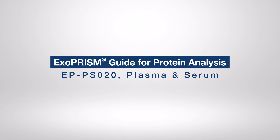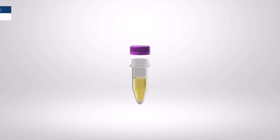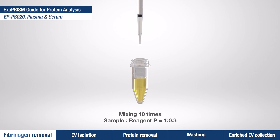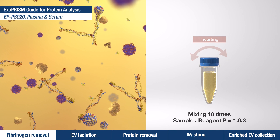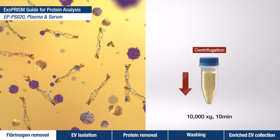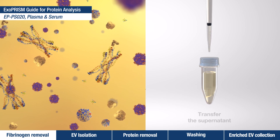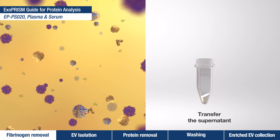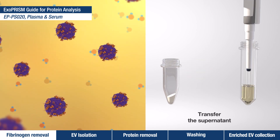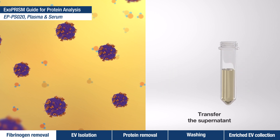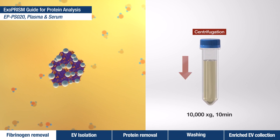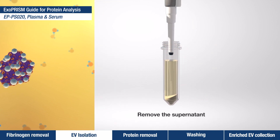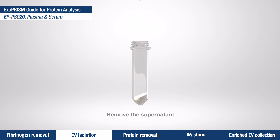This is the workflow of plasma and serum extracellular vesicle isolation for protein analysis. Reagent P is a low molecular weight electrolyte mixture solution, optimized for plasma and serum EV isolation. After reagent P is mixed with a sample in a guided ratio and the mixture is centrifuged, fibrinogens are removed first. Upon addition of an increased amount of reagent P to the supernatant, the ionic strength on the surface of extracellular vesicles undergoes a rapid change, causing immediate coagulation and subsequent precipitation upon centrifugation.